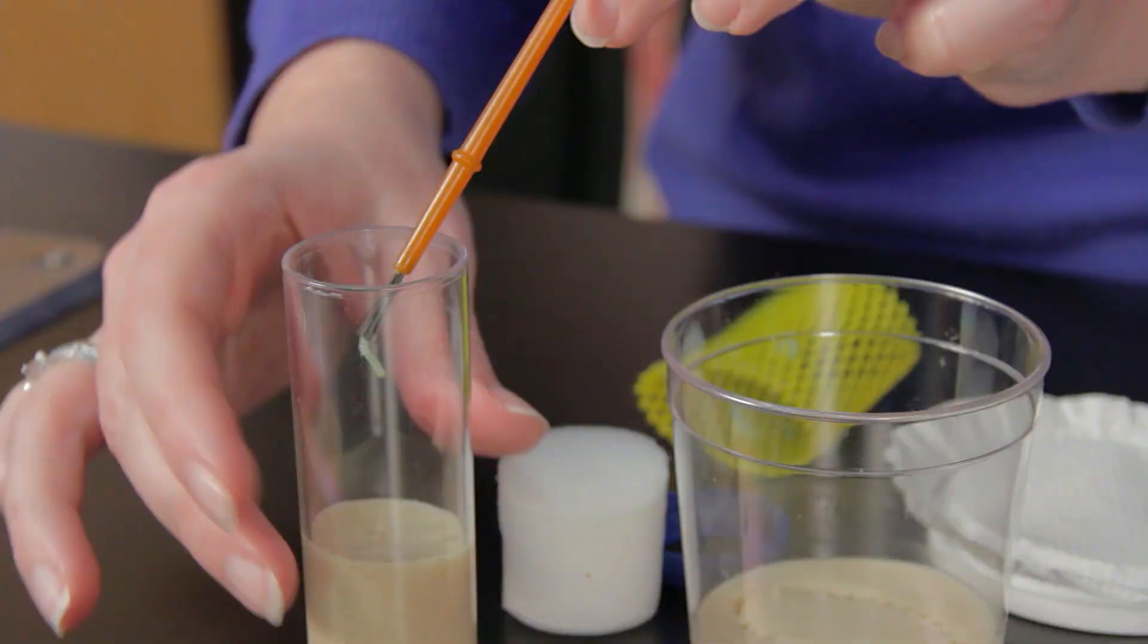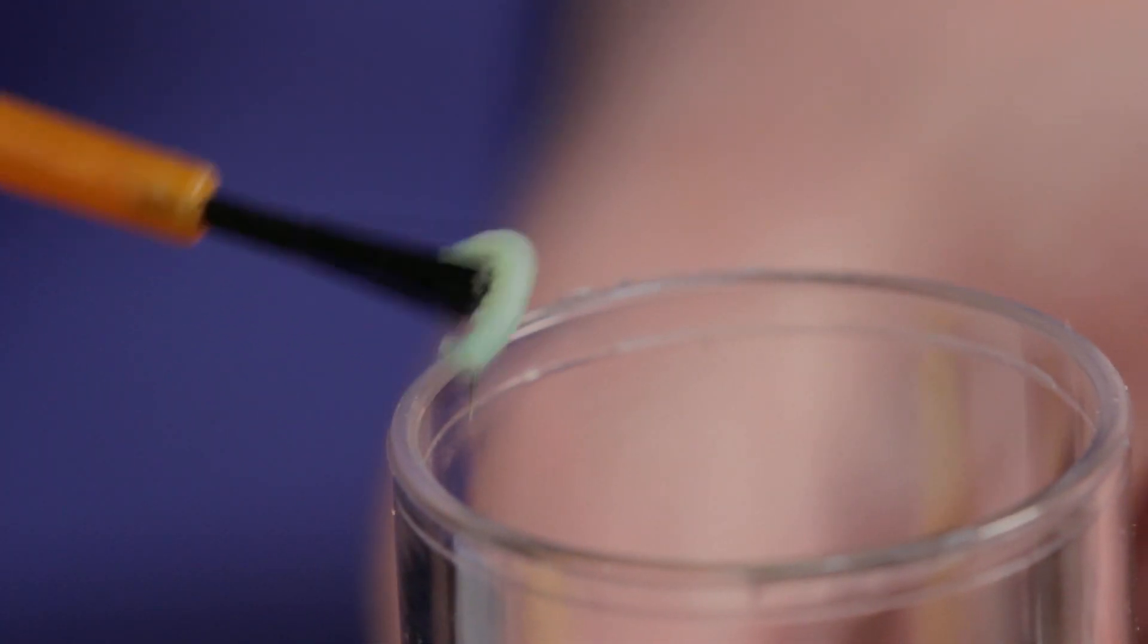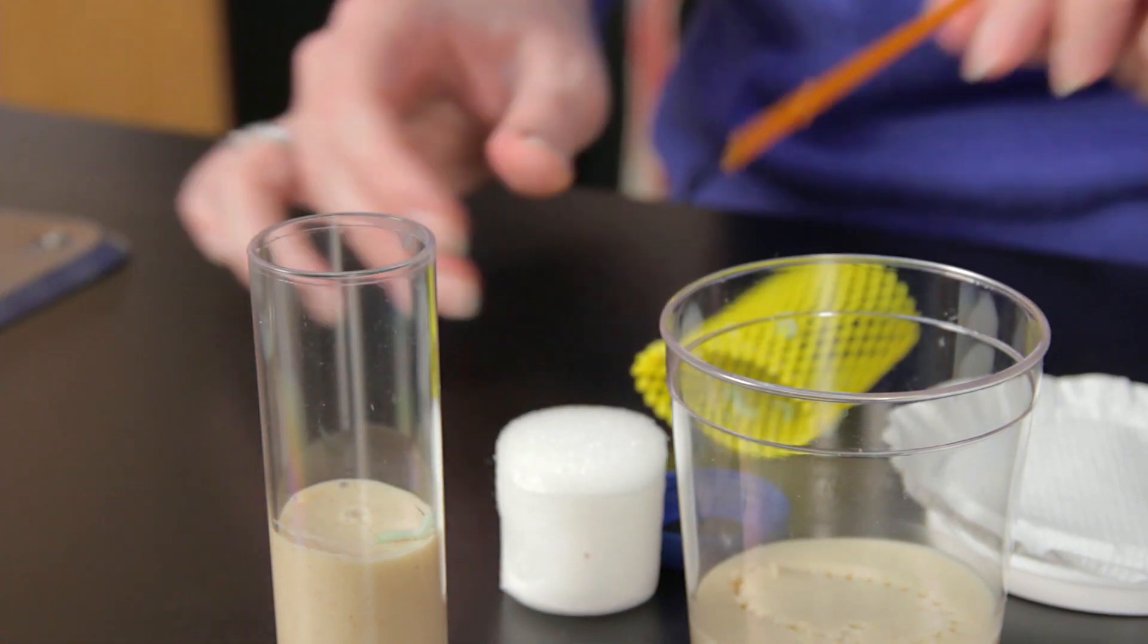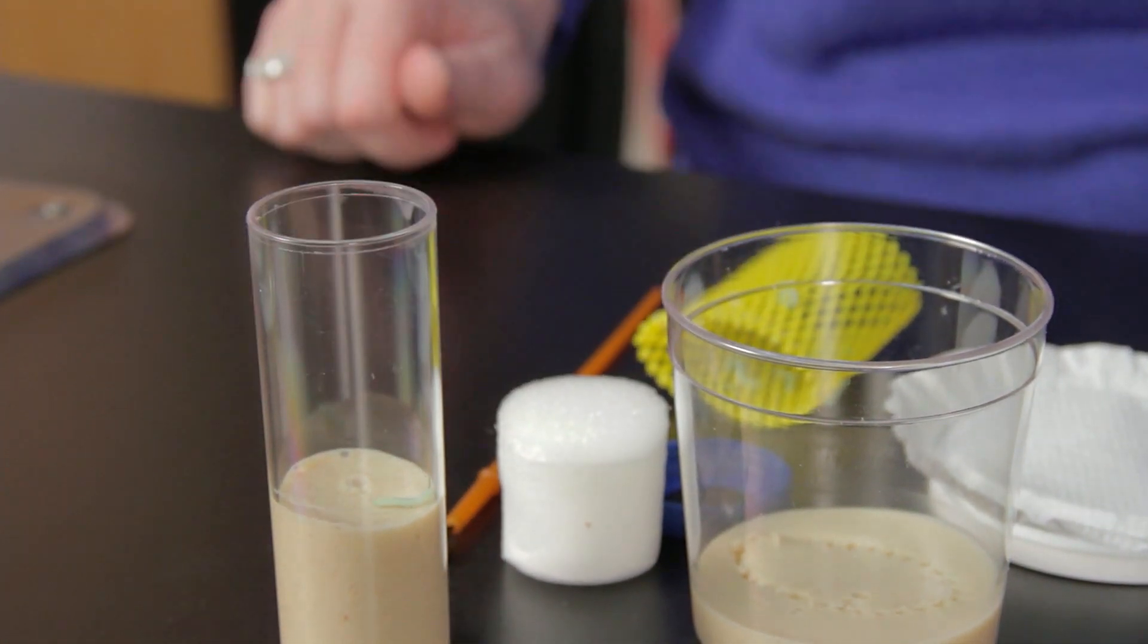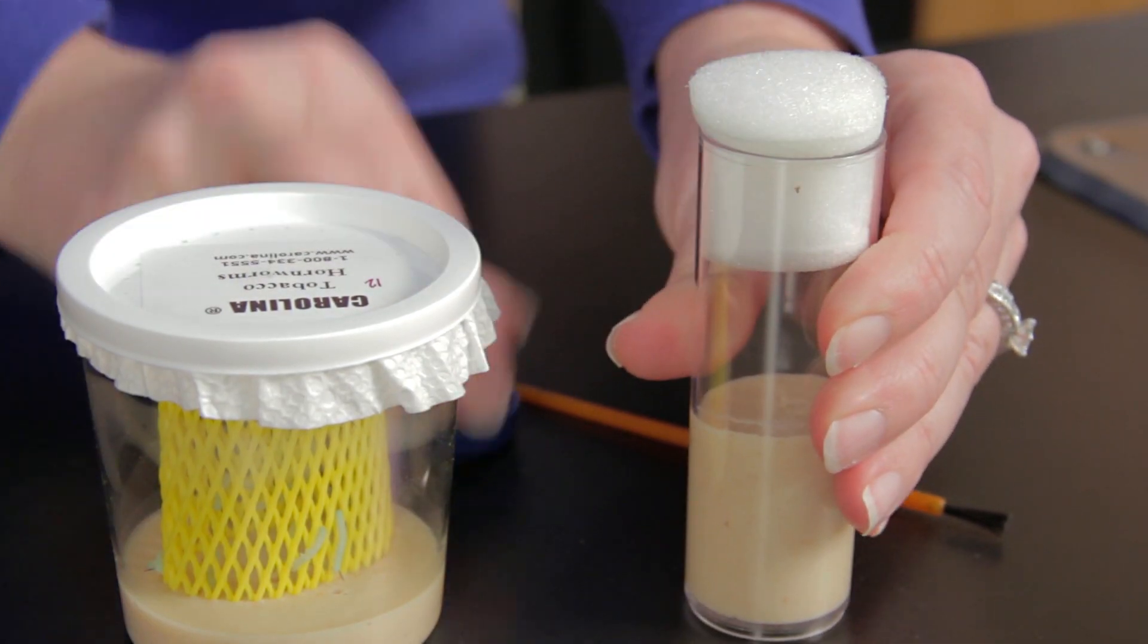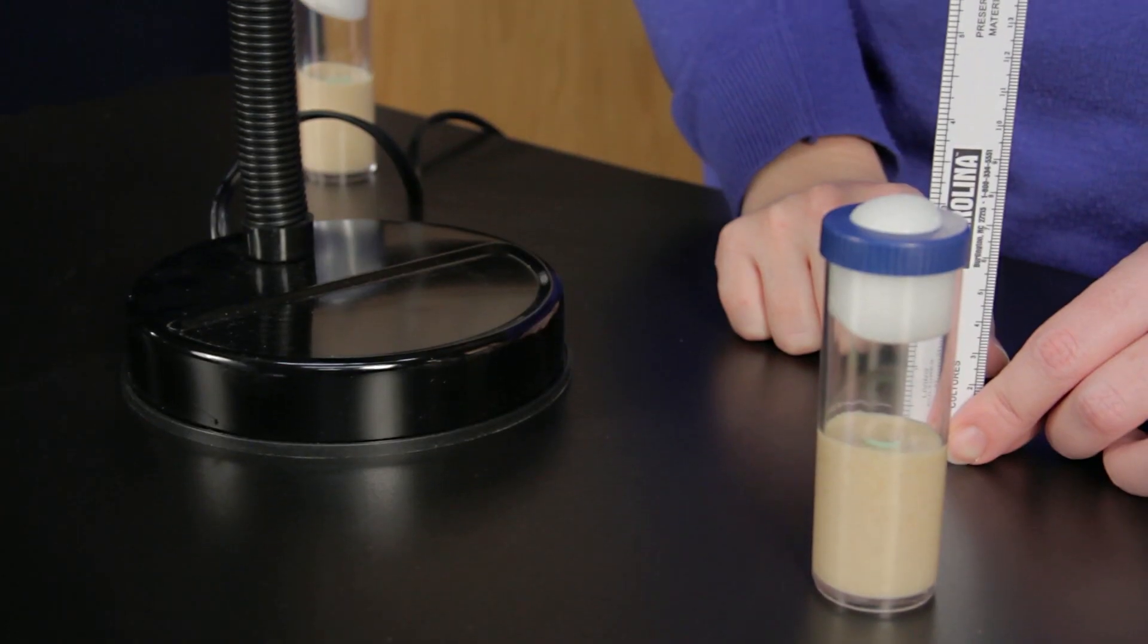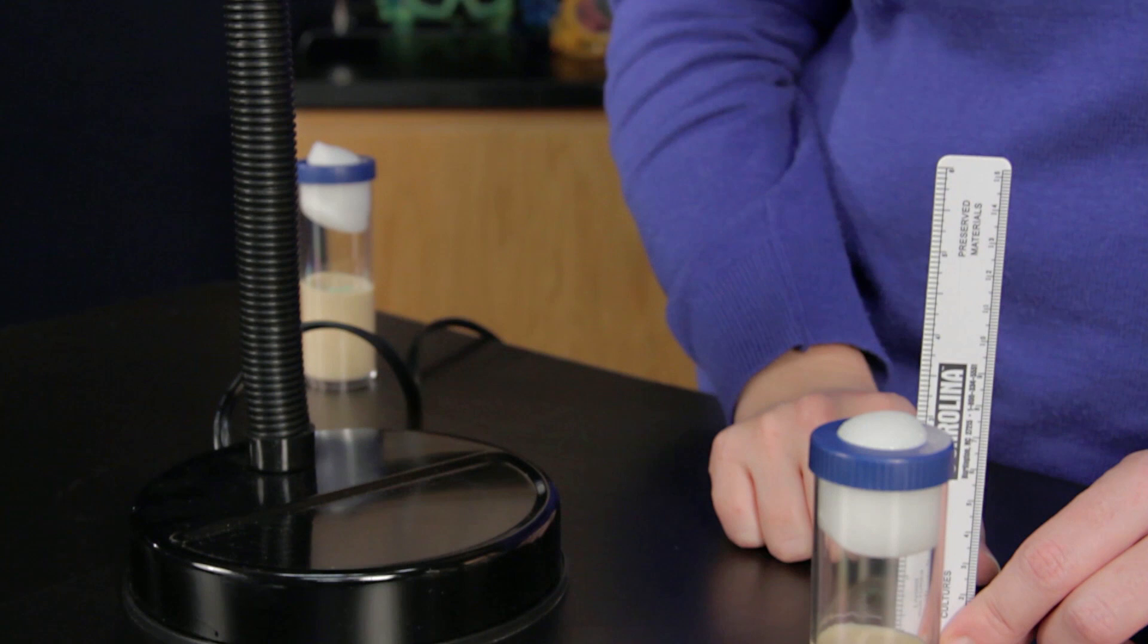Place a foam plug in the tube, then snap the lid on the vial and set the vial under a lamp with a 100-watt bulb. Starting around 25 centimeters above the vial, adjust the placement of the lamp until you gain a constant temperature of 27 degrees Celsius.